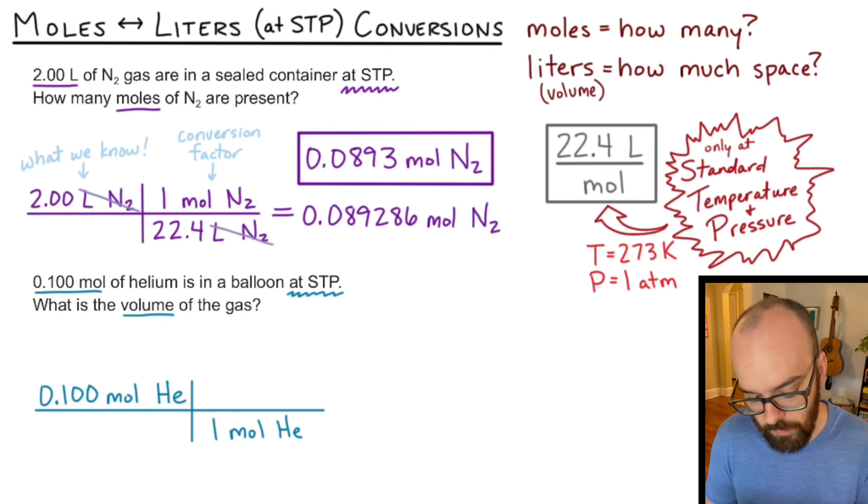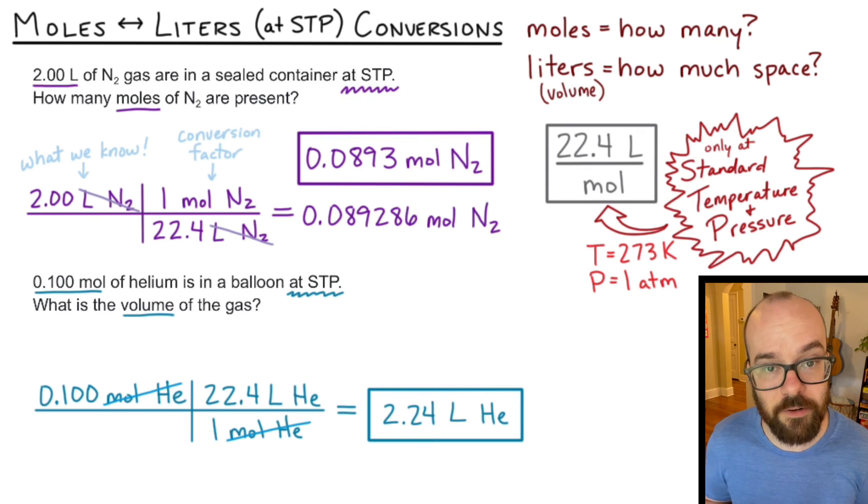And then on the top of my conversion factor, 22.4 liters of helium, the moles will divide out. And I don't even need a calculator for this one. 0.1 times 22.4. I'll just move the decimal to the left one. And I get 2.24 liters of helium.